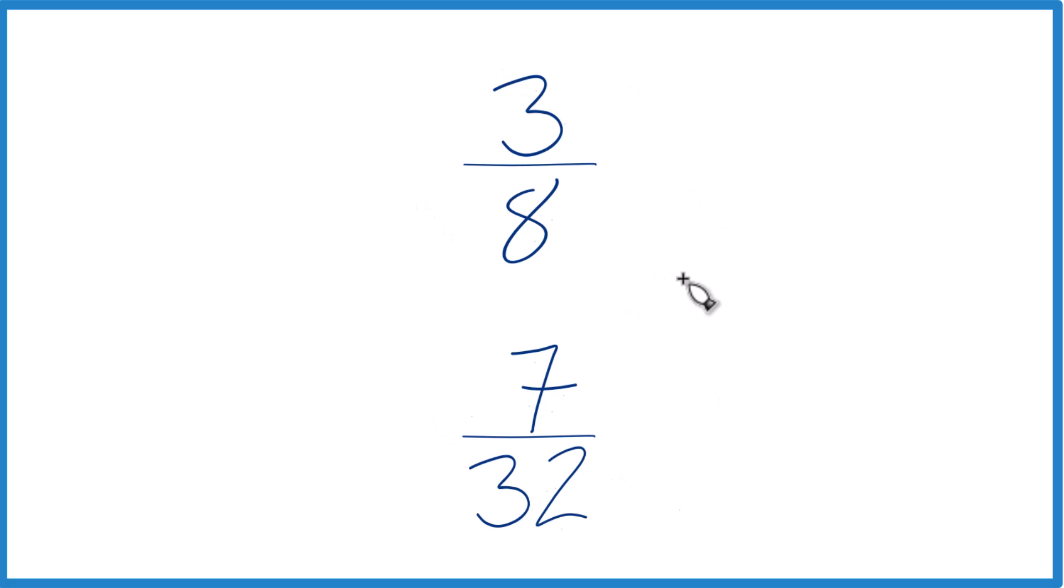The other way to do it is find a common denominator. Right now we have 8 and 32, but if we can get the same denominator, we just compare the numerators, figure out whether 3 eighths is greater than 7 32nds.